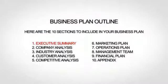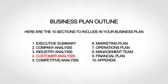The first section is your executive summary, which is essentially the introduction to your business plan. The next section is your company analysis, which gives a little more background. Next up is your industry analysis, where you talk about your market and trends. The fourth section is your customer analysis, where you go more in depth about your target market. The fifth section is your competitive analysis, where you provide an analysis of your competition, including what differentiates you from your competitors.